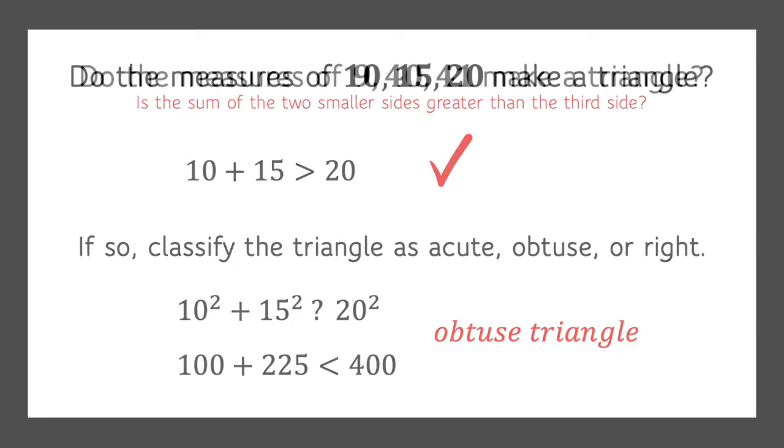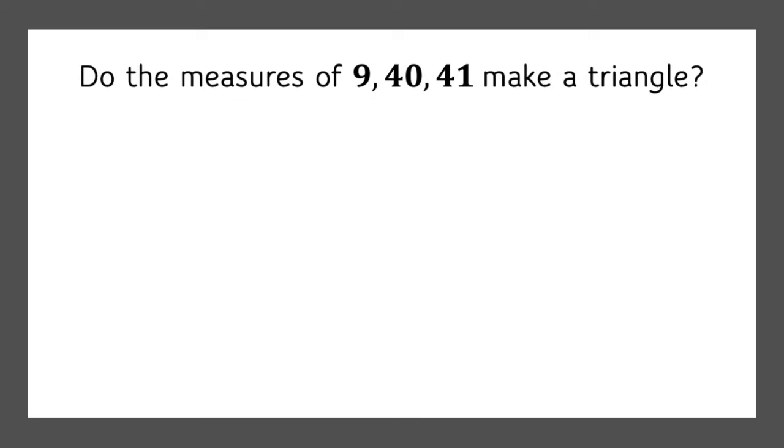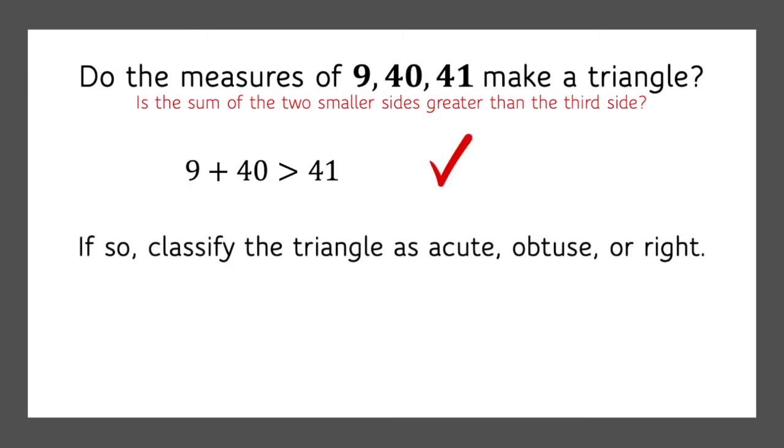Let's use 9, 40, and 41. So first, we're going to check out the two smaller sides, add them together, and see if they're greater than the third side. So 9 plus 40 is greater than 41, so we have a possible triangle, and now we'll classify that triangle as acute, obtuse, or right. So 9 squared plus 40 squared, what relationship is that to 41 squared? I dropped the little two, but it should be there. So 81 plus 1600, that actually equals 41 squared, or 1681, so we're working with a right triangle.